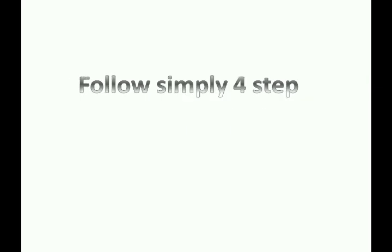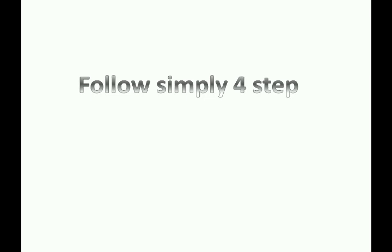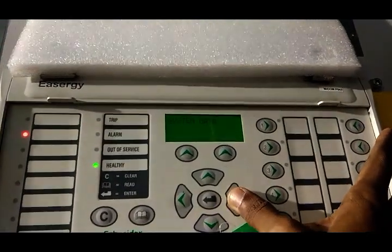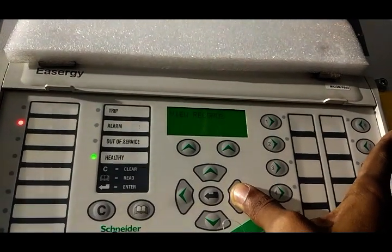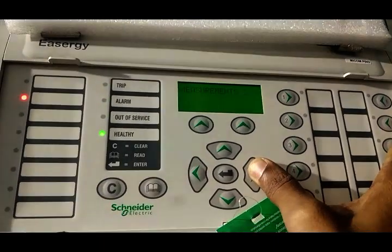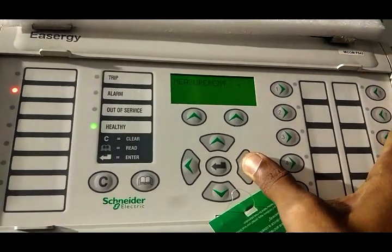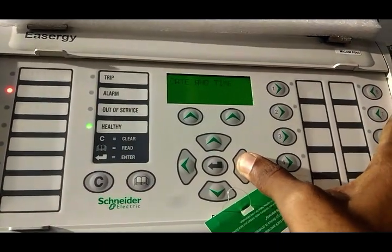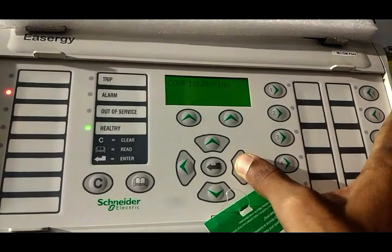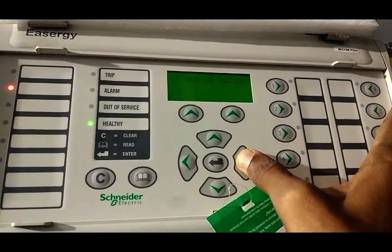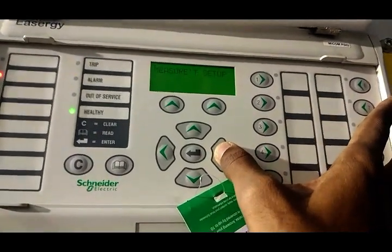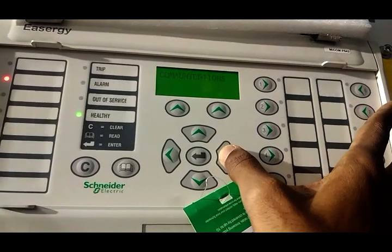For this you have to keep in mind 4 steps. Step 1: initially press the down key to get the menu, and then press the right arrow again and again until you find the commissioning test menu.